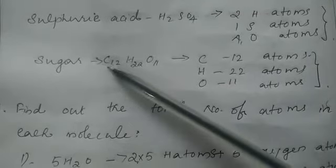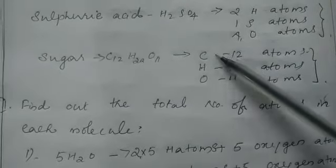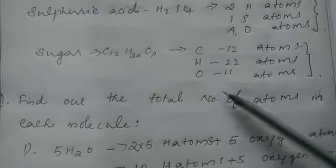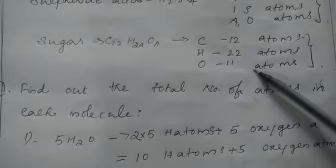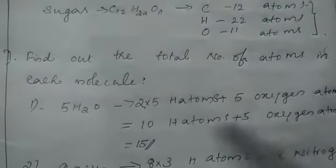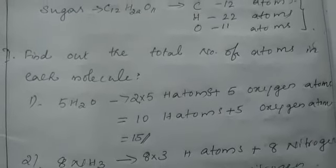Then sugar, C12H22O11: 12 carbon atoms, 22 hydrogen atoms, 11 oxygen atoms. Is it clear? Then find out the total number of atoms in each molecule. That means total number of atoms.